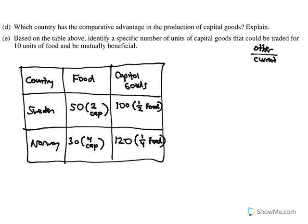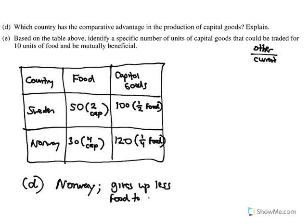For part D, it wants to know who has the comparative advantage in capital goods. You have to ask: would you rather give up half of a food unit or a fourth of a food unit? I'd rather give up a fourth because it's less. So Norway has the comparative advantage in capital goods — the reason is it gives up less food to produce a capital good.